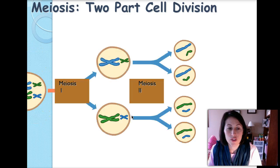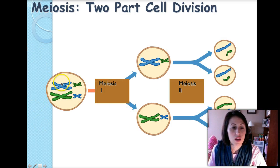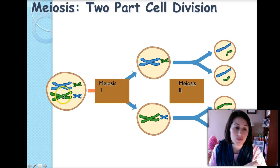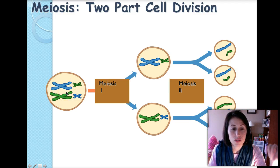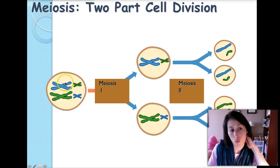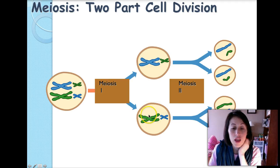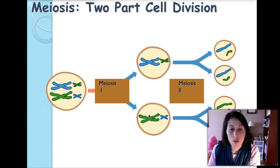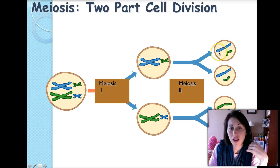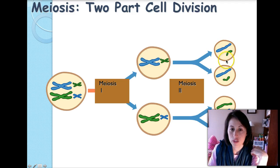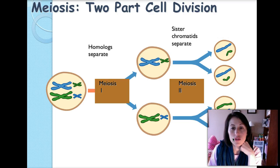There are two parts to meiotic cell division. Starting with the original cell containing homologous chromosomes — the blue paternal chromosome and the green maternal chromosome — the first meiosis phase splits up those homologous chromosomes so each cell gets one set. The sister chromatids are still together, which is why it has to go through meiosis a second time to separate them. In meiosis one the homologues separate; in meiosis two the sister chromatids separate.